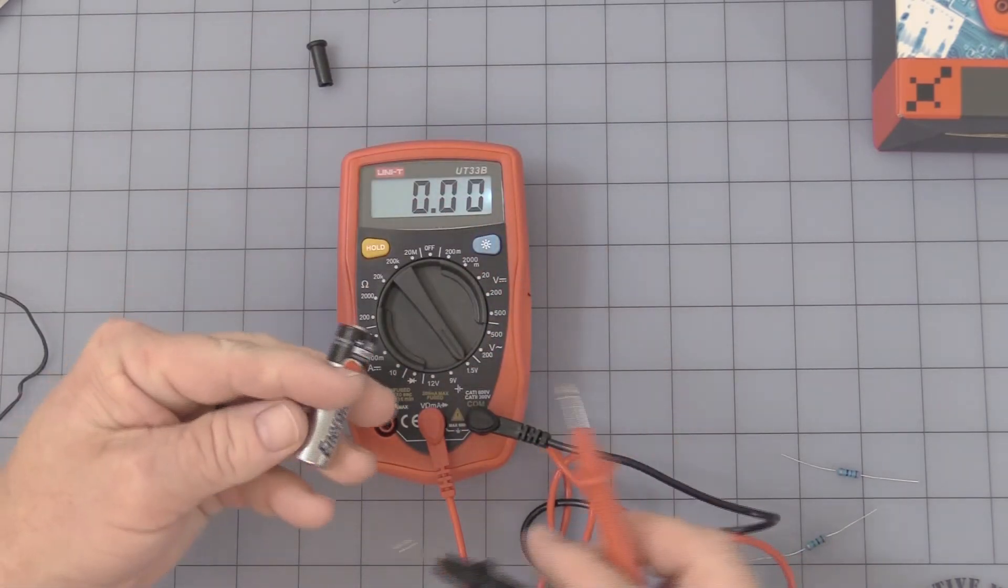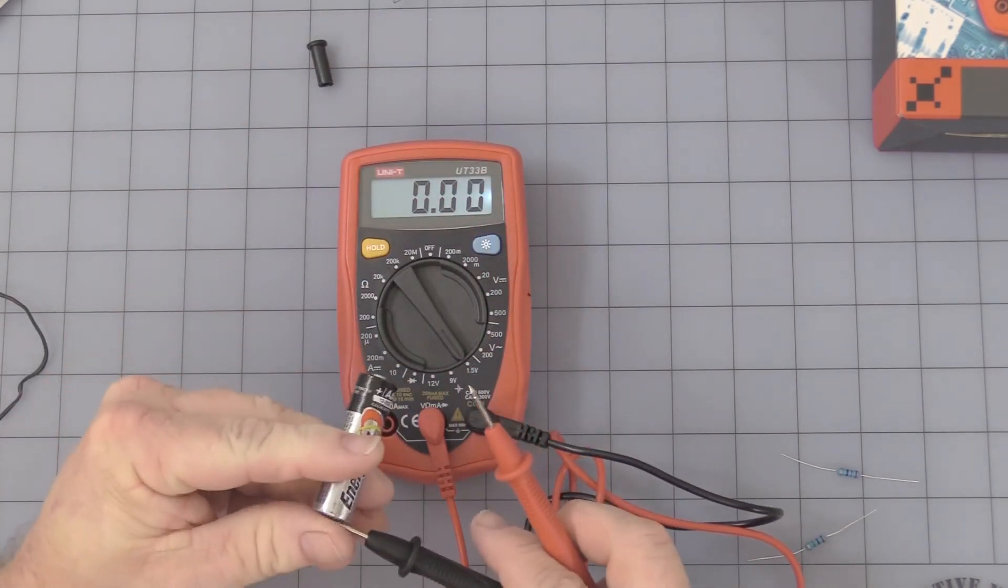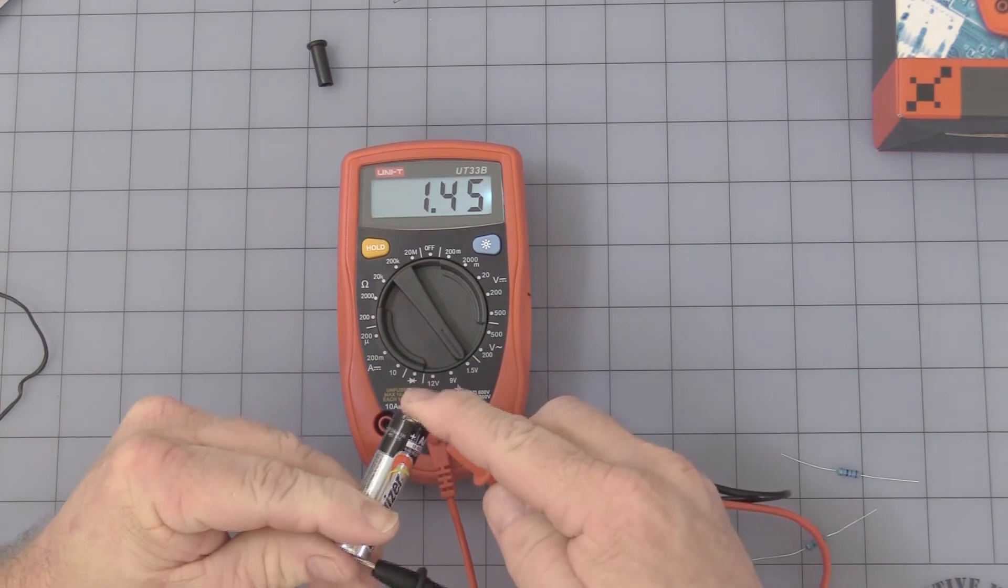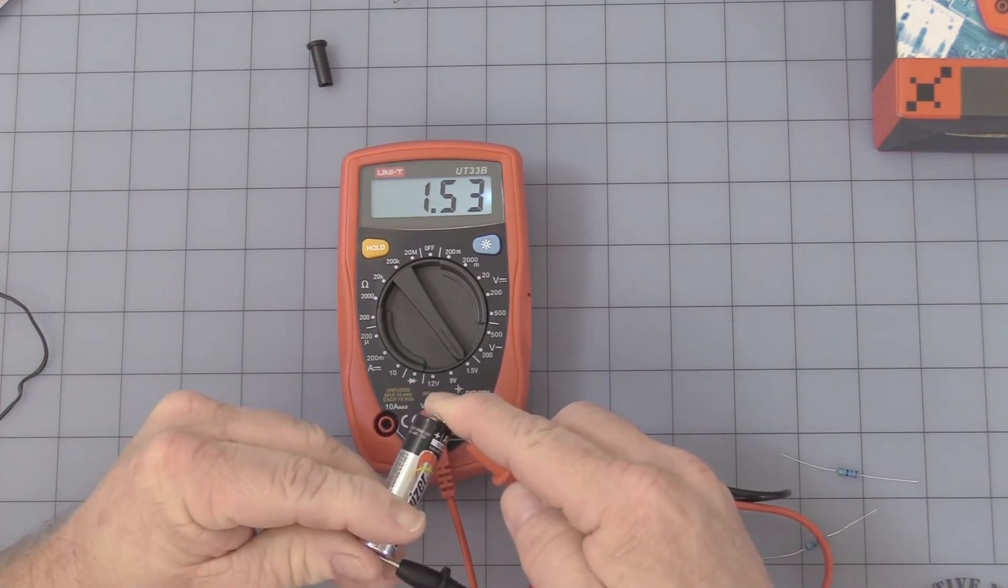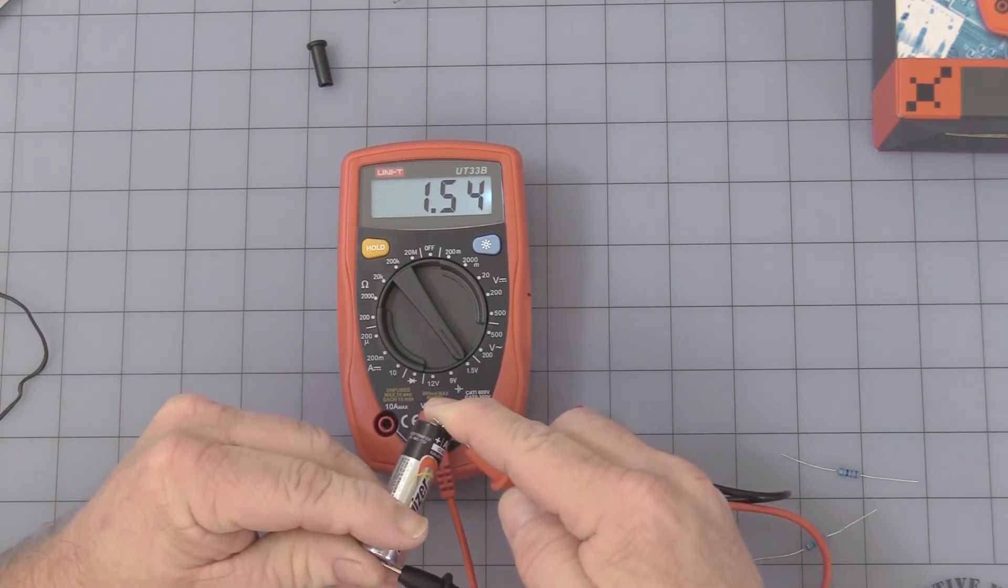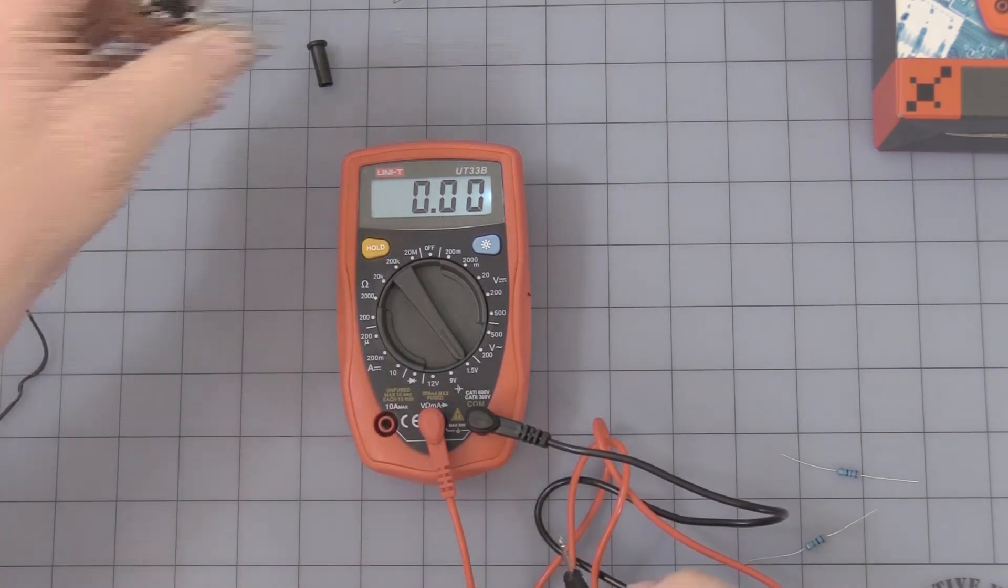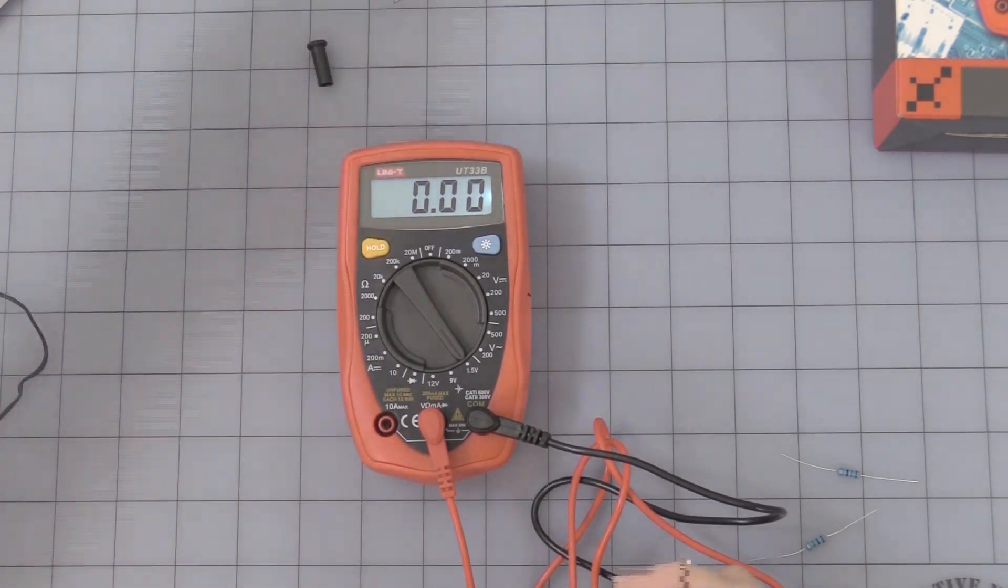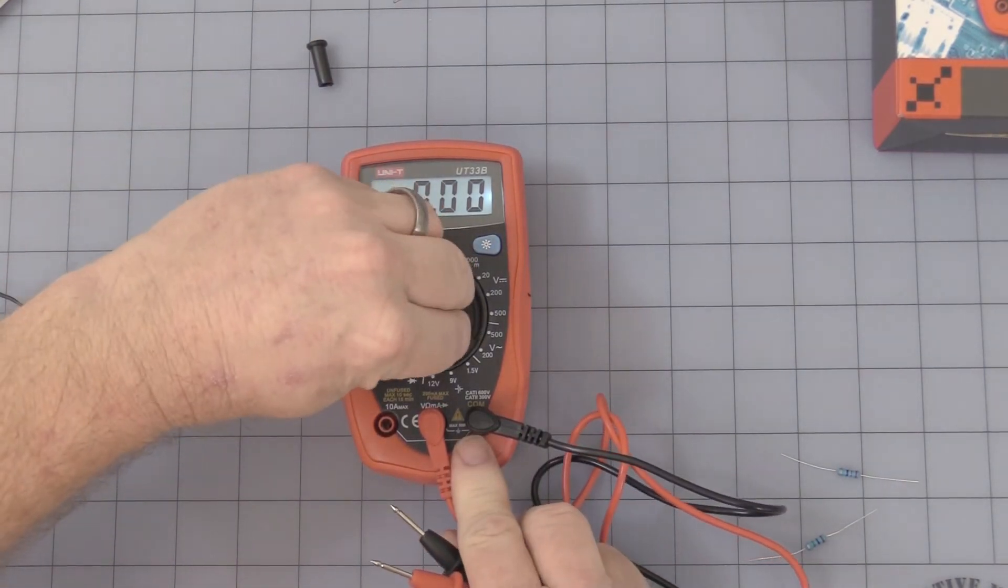So we can use our battery again here to test it. See what it's like under a load. As you can see, it's testing at 1.54 volts for your AA battery. Then the next 9 volt, 12 volt.